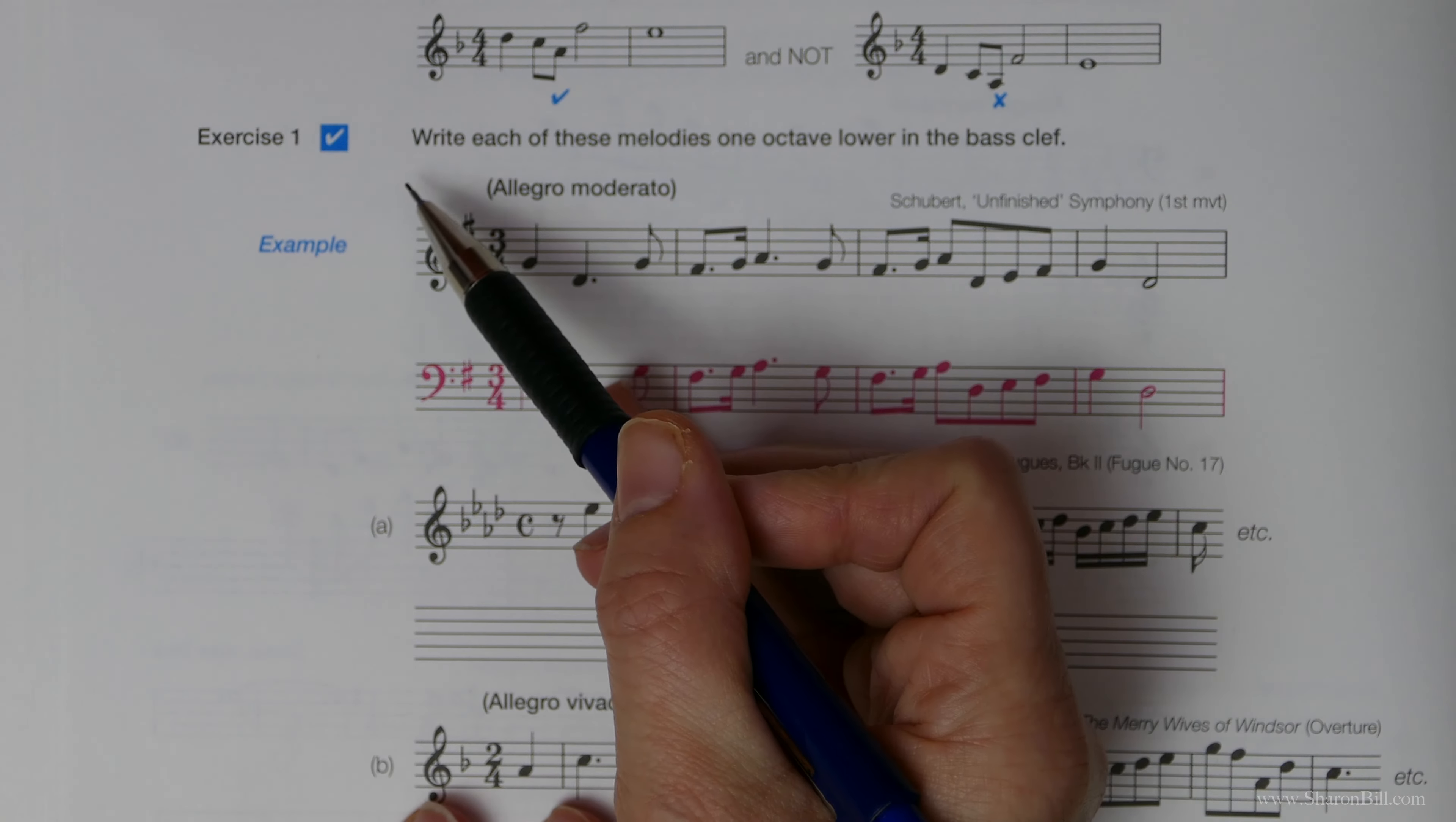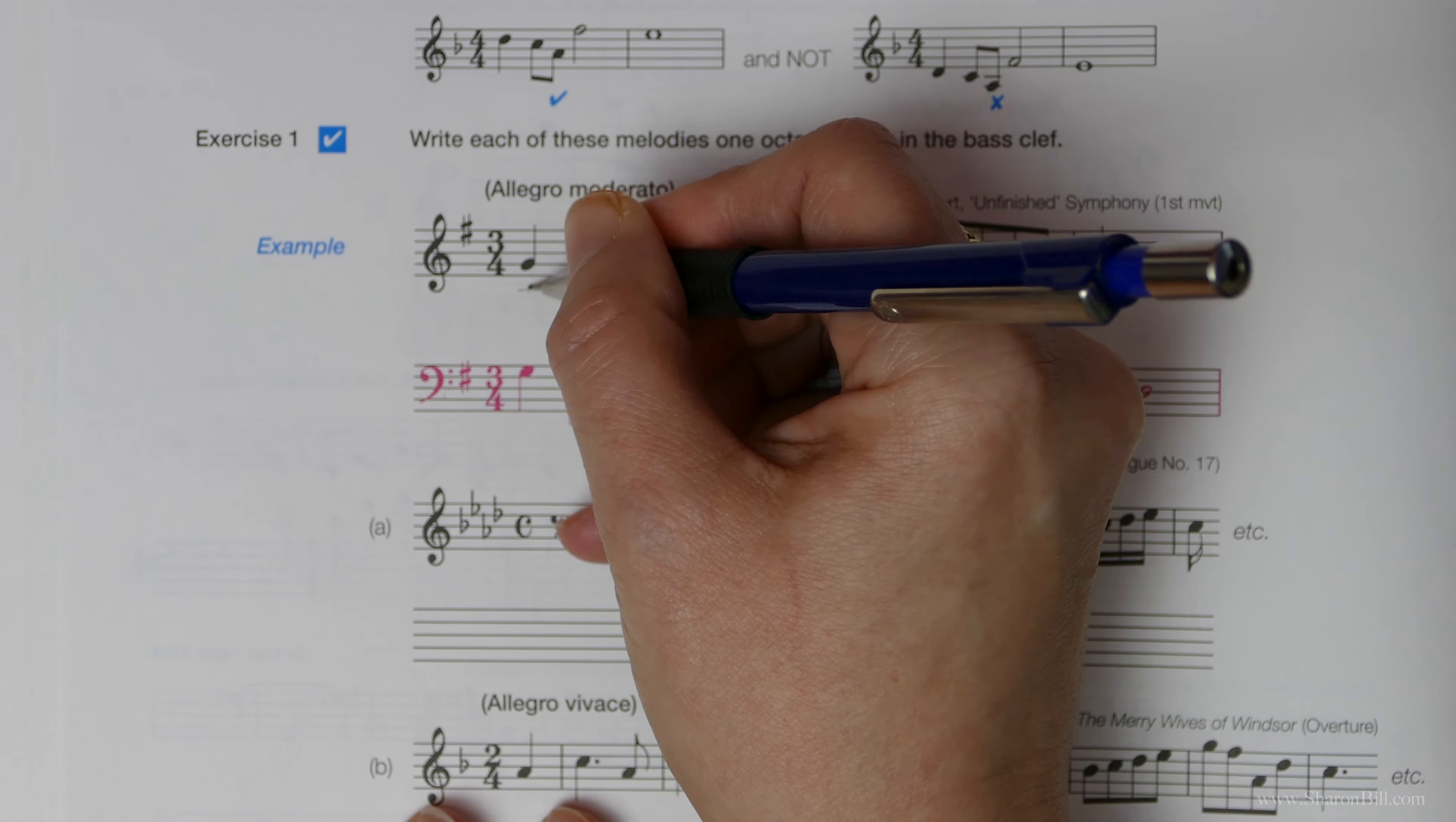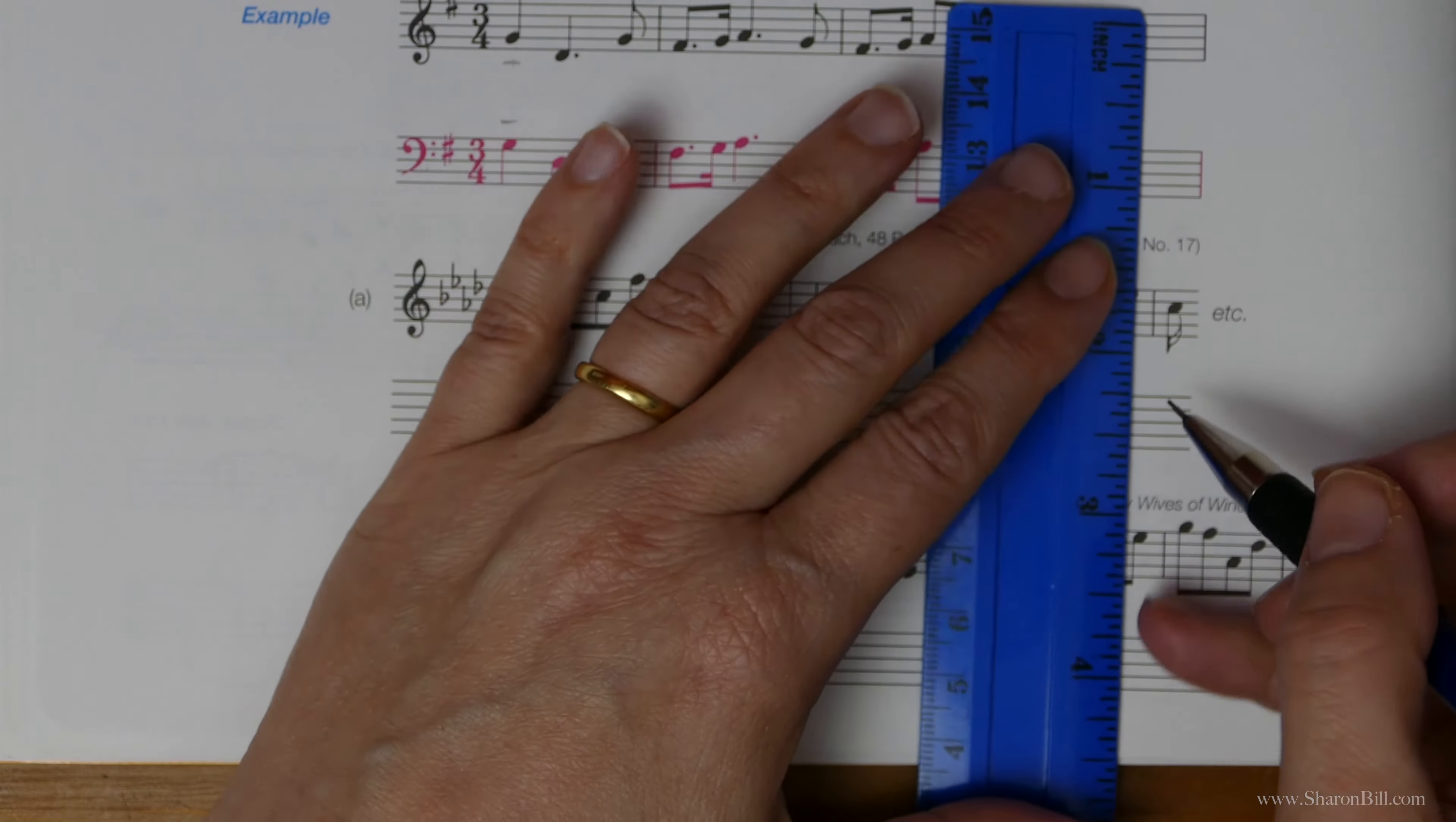So exercise one asks us to write each of these melodies one octave lower in the bass clef. We've started in treble, we're changing to bass, and we need to change the octave by an octave lower. In this first example, we are given the G above middle C, and we need to change that into the bass clef, and it needs to become the G below middle C. If you keep middle C as your anchor point, but then change the octave accordingly. So if I just give you a start on this next exercise A, then you can have a go at that yourself.